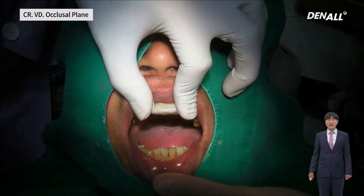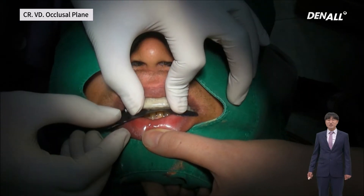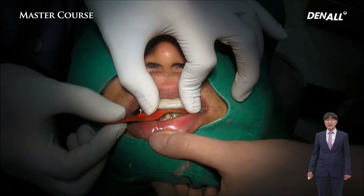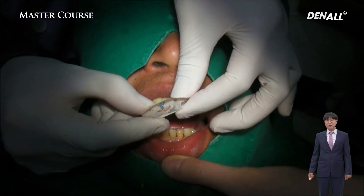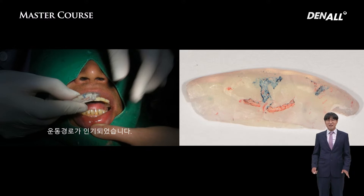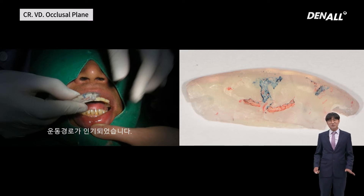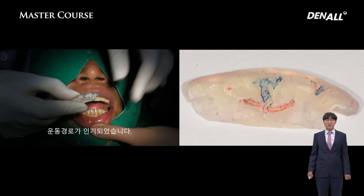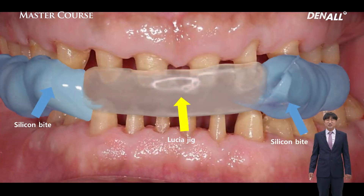Using a Lucia jig, I'll show you how it works. This is how to record lateral and anterior movements. CR is considered the starting point of such movements. In the posterior region, interocclusal relation is taken using a silicone bite. If you come to master courses, various CR obtainment methods will be taught with hands-on. For full mouth rehabilitation, I use a Lucia jig quite actively.